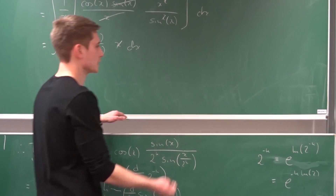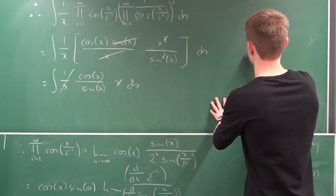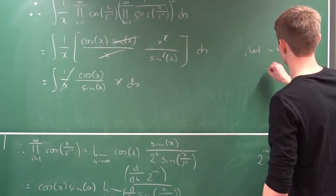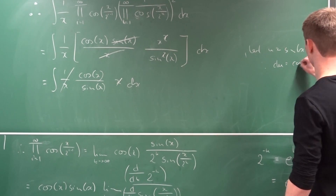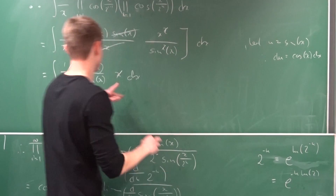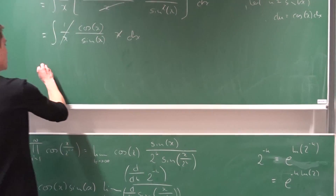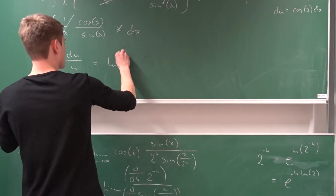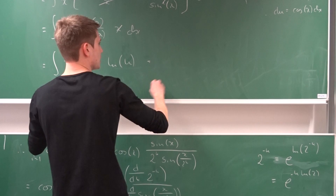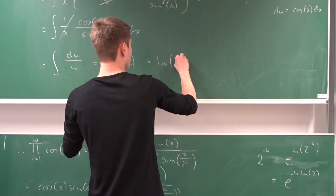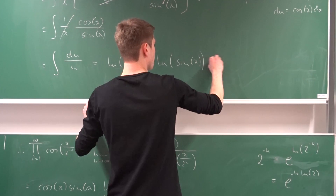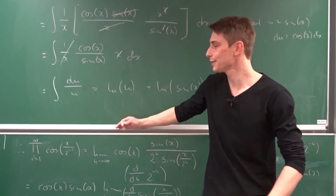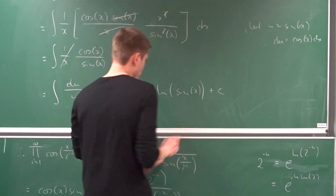Now we actually want to integrate that, and that's the easiest task. Let u equal to sine of x, so du equals cosine of x dx — exactly what we have. Our integral is now du over u, which gives ln of u, and this is nothing else than the natural log of sine of x plus some arbitrary constant C. That was quite easy; it was just a lot of writing.